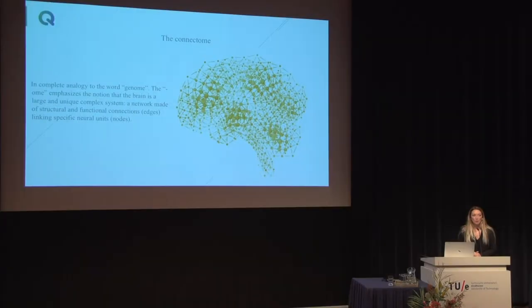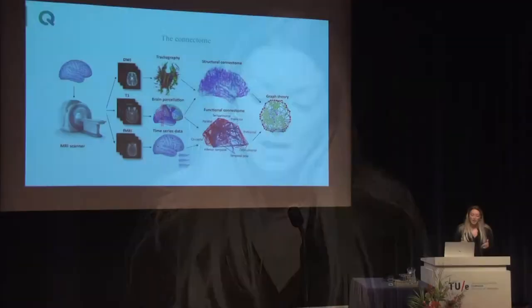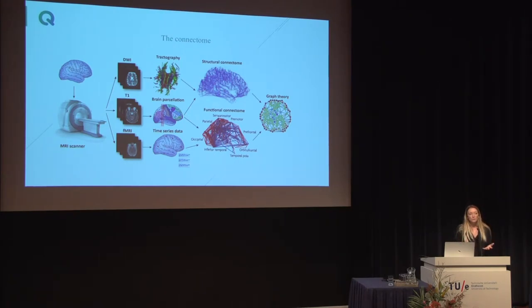The connectome has been a hot topic in the last five years or more. The term was coined in analogy to the word 'genome.' The '-ome' emphasizes that the brain is a large, unique complex system — a network made of structural and functional connections (edges) linking specific neural units (nodes). Putting everything together: from the T1 we can parcellate the brain into different anatomical regions; from tractography we see how those regions are connected, giving the structural connectome as a 2D matrix. With functional MRI, we know how these anatomical regions are functionally correlated, again giving a 2D matrix. This gives us a beautiful mathematical framework to represent every individual brain as a 2D matrix and analyze it with graph theory.